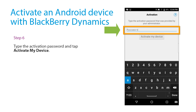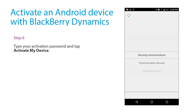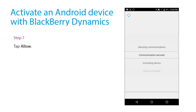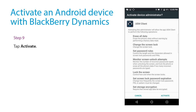Type the activation password and tap Activate My Device. Tap Allow, then tap Next, then tap Activate.